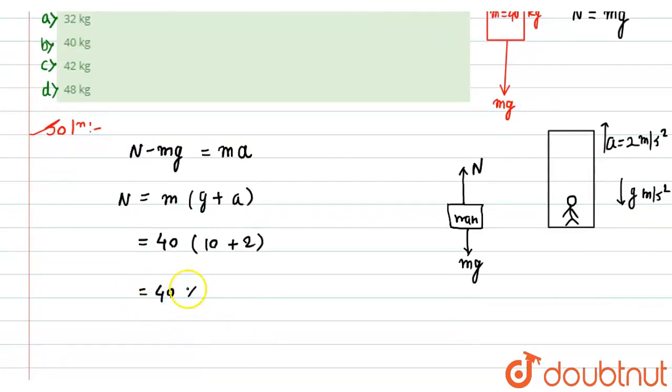So it would become equal to 40 multiplied by 12, it would be equal to 480 newton. So actually this is what we got, the force in downward direction when the lift is going in upward direction, in newton.